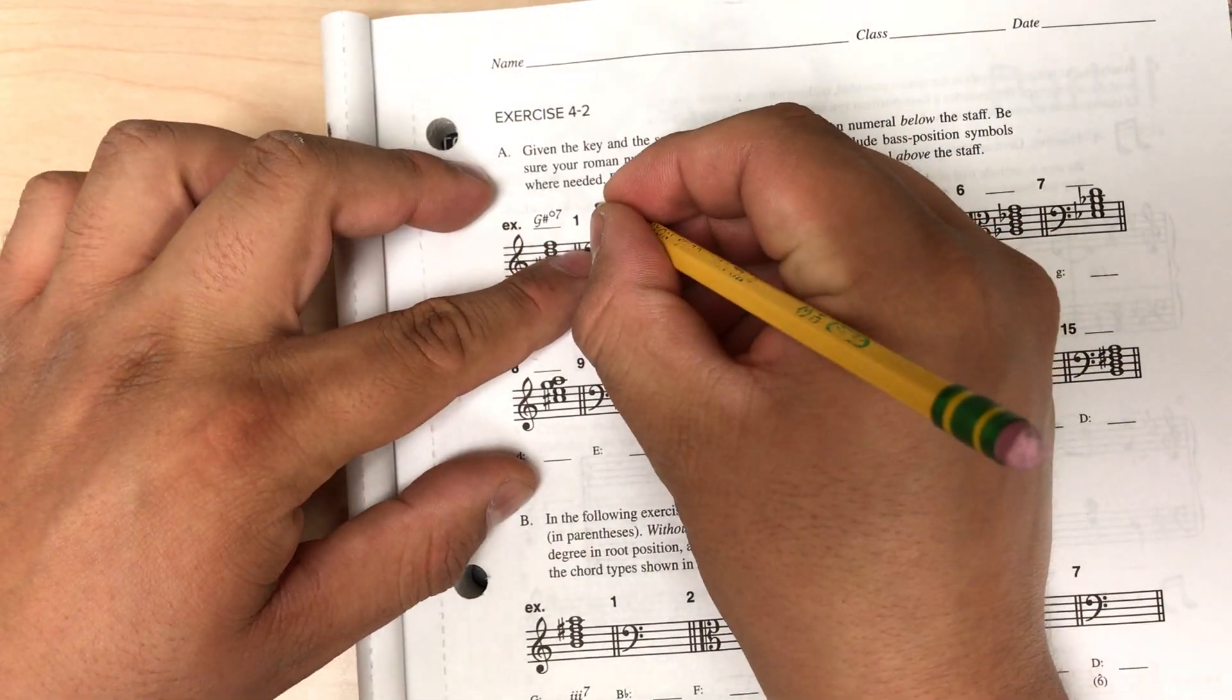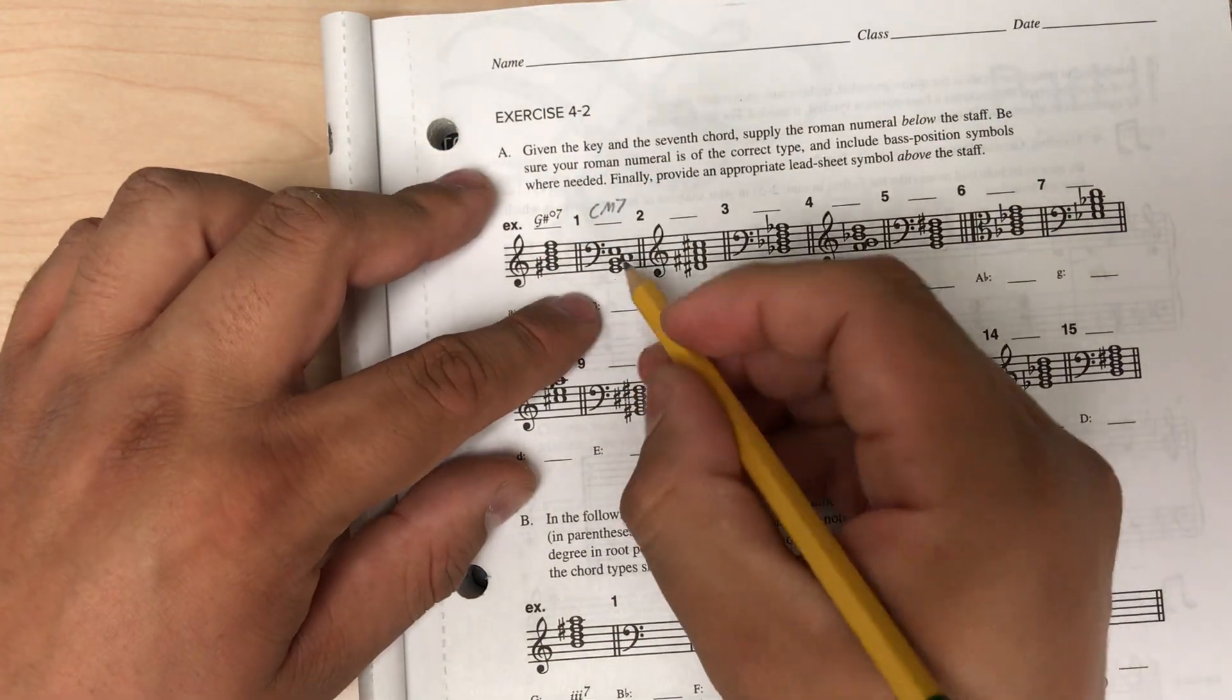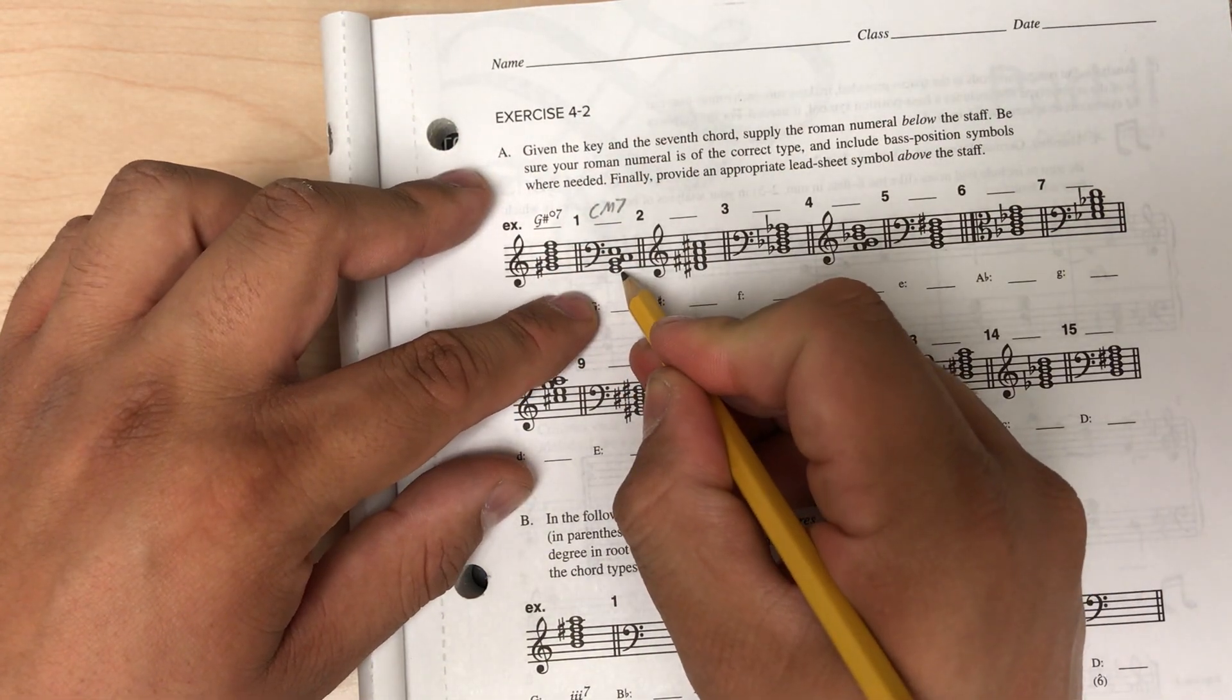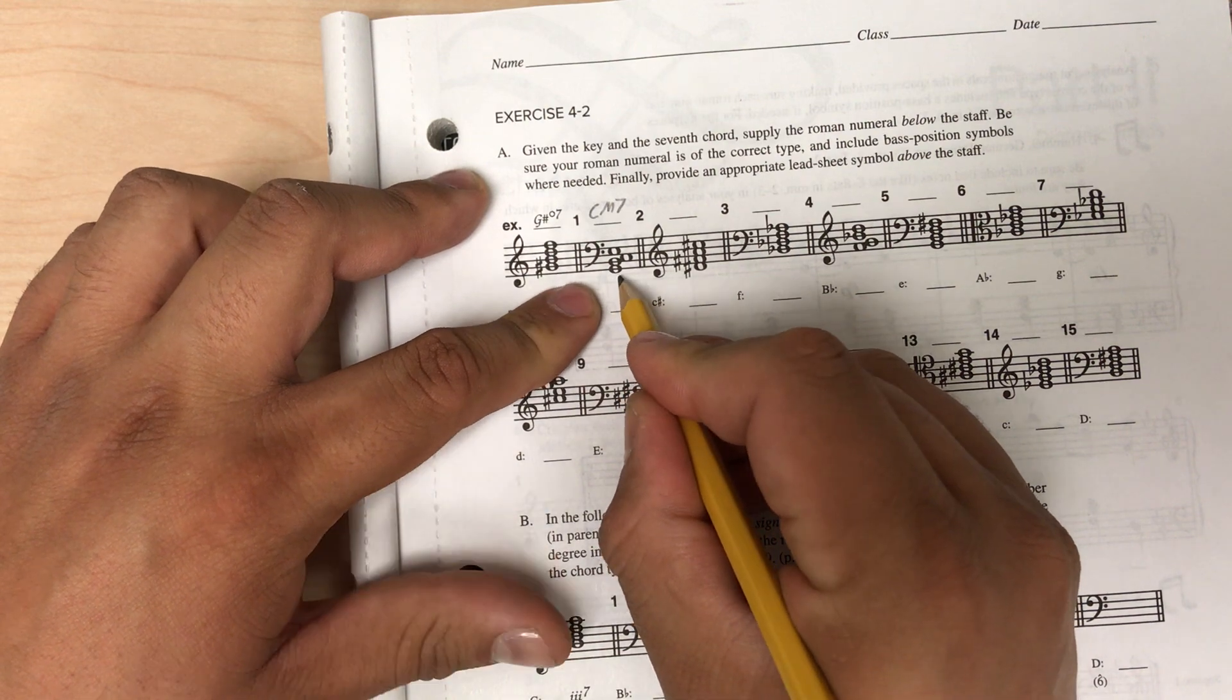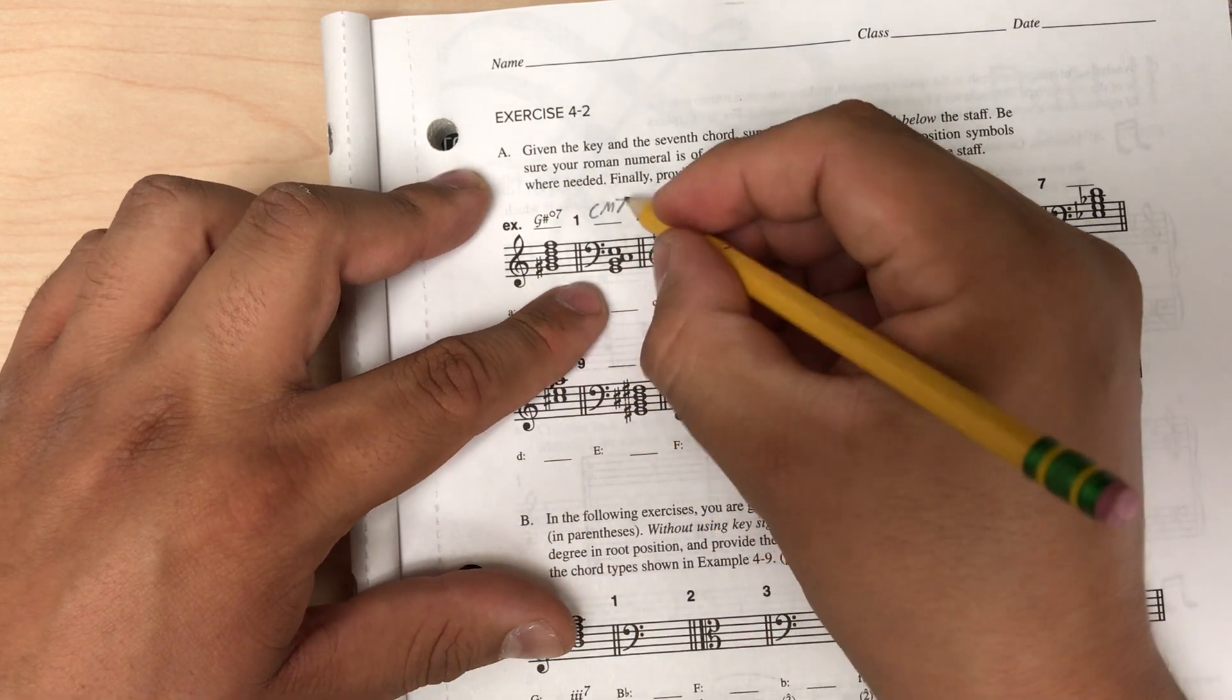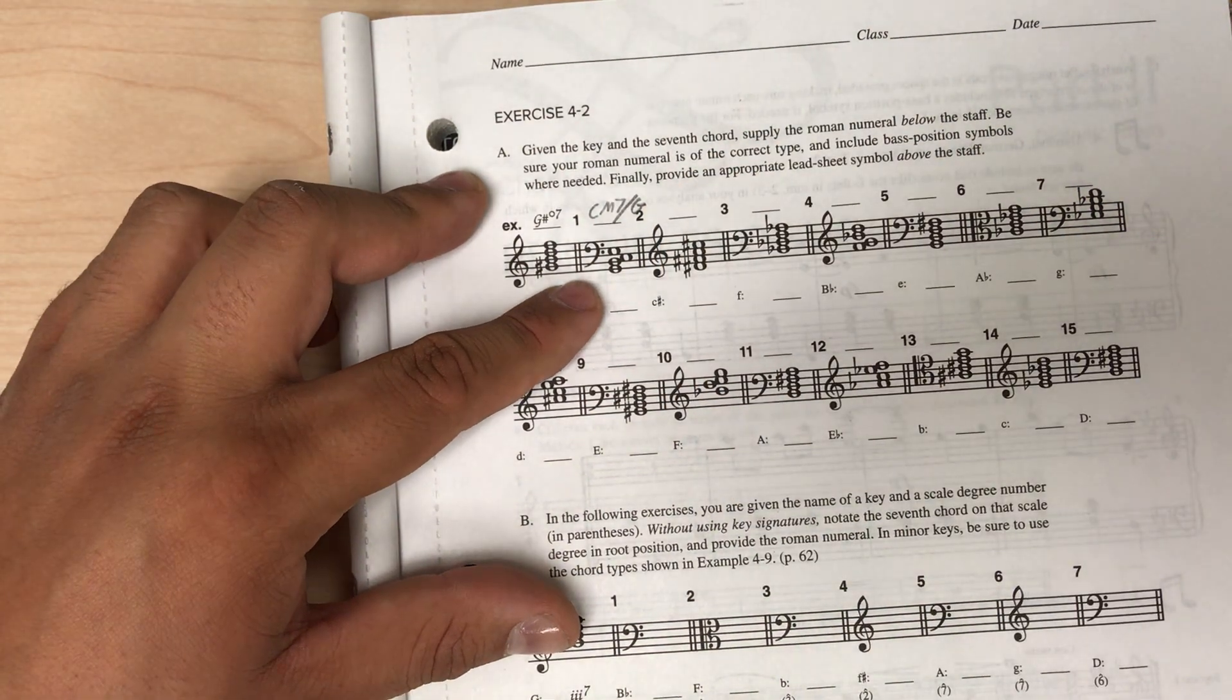So I'll write that in. C major seventh, but it's not in root position, so I have to use slash notation to say what the base note is. So G is my lowest note. So this is a C major seven over G.